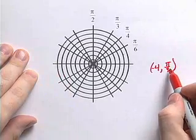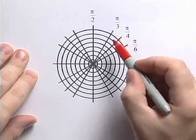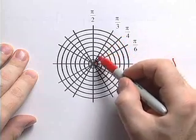First thing we're going to do is locate our angle, pi over 3. You can see on a graph that corresponds to this line right here.